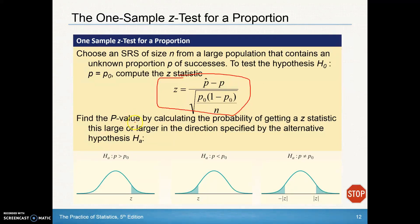So find the p-value by calculating the probability of getting that z-statistic this large or larger in the direction specified by the alternative hypothesis. So again, if you're looking at your hypothesis value, you're testing to see if it's greater than, so you're looking for the probability in this area. When it's less than, you've got a left-tailed test in this area here. And if it's not equal to, you've got a two-tailed test. So you'd end up finding one of these areas and really just doubling it because this area over here is the same size.